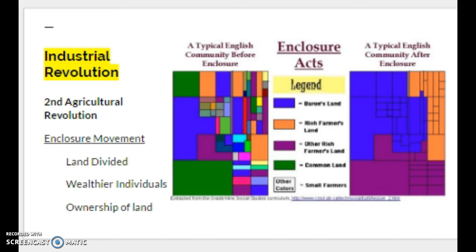We can really focus on England as the heart of the second agricultural revolution. One notable component is something known as the Enclosure Acts. The Enclosure Movement was a series of acts passed by Parliament that made it easier for wealthier landowners to buy up, enclose, or build fences around smaller farms.